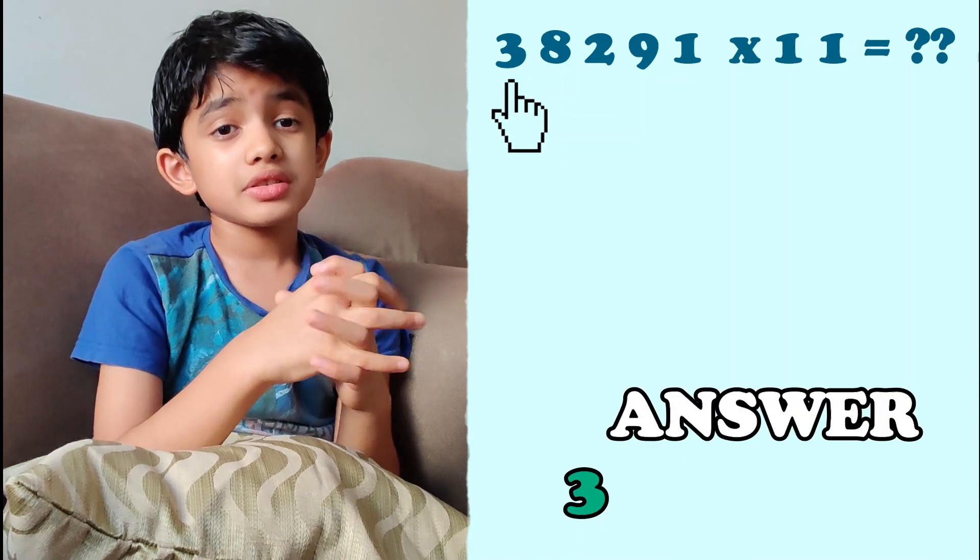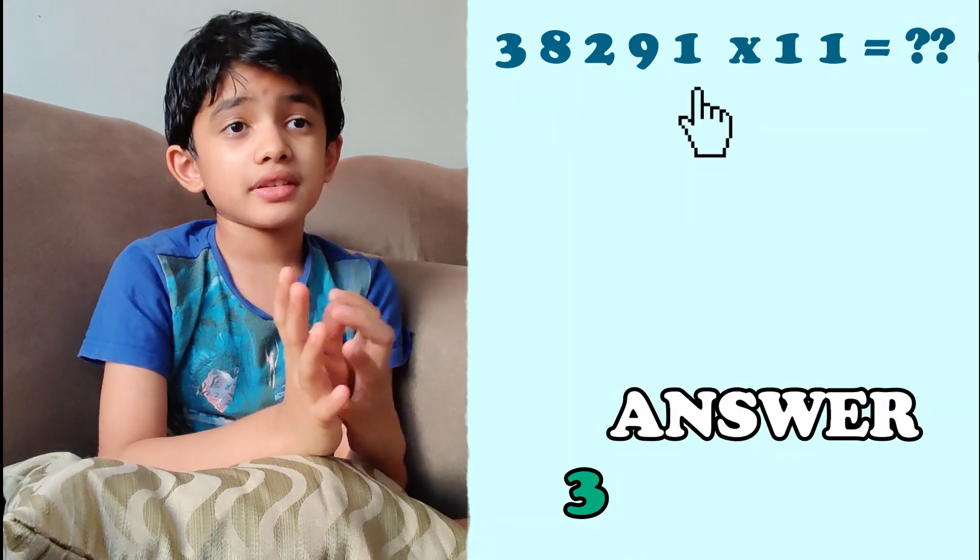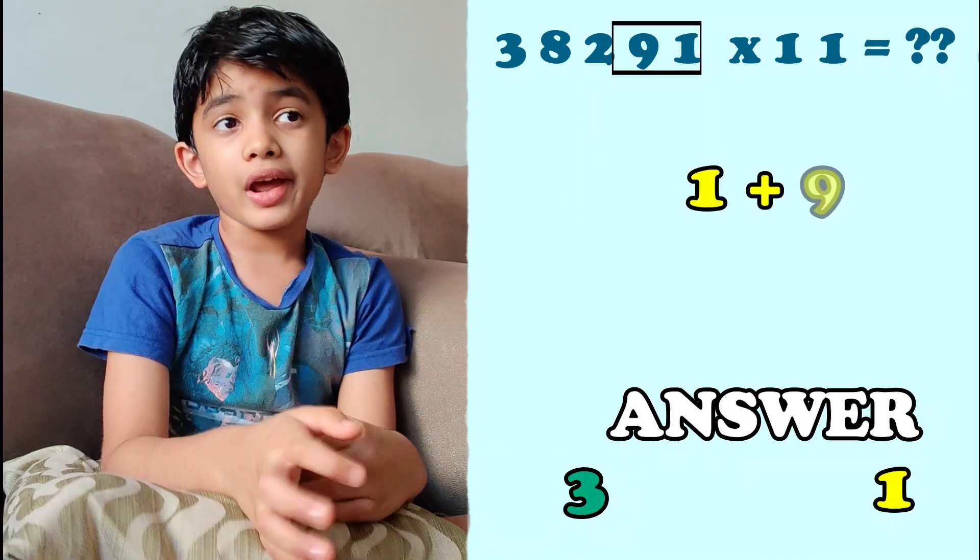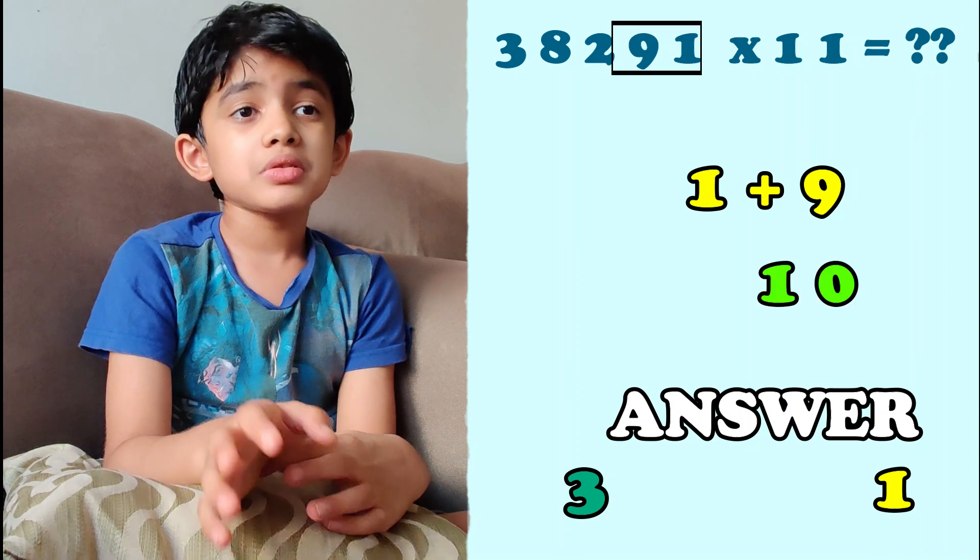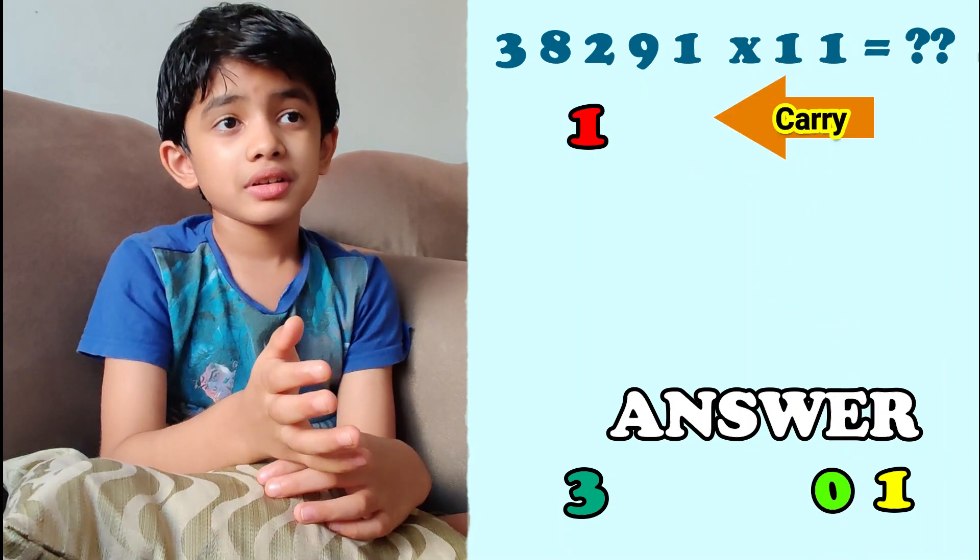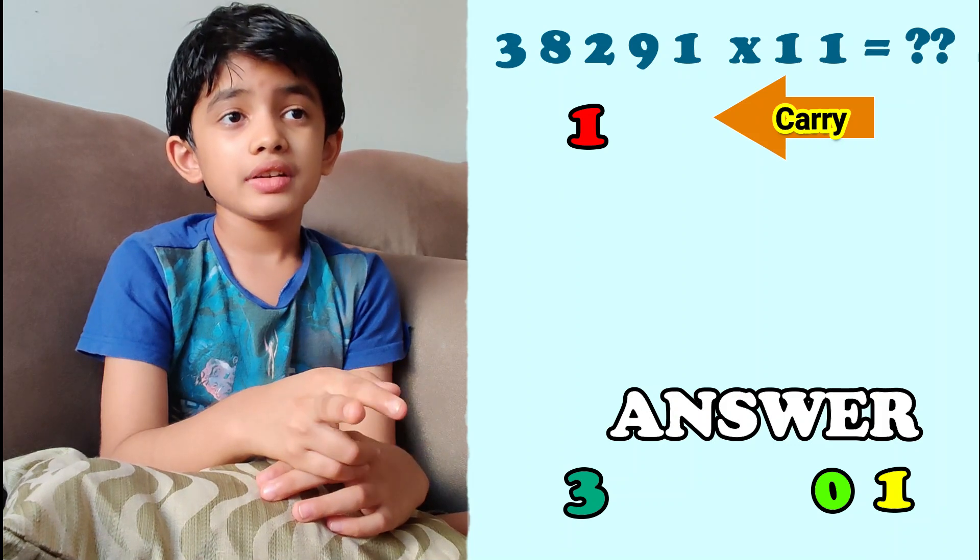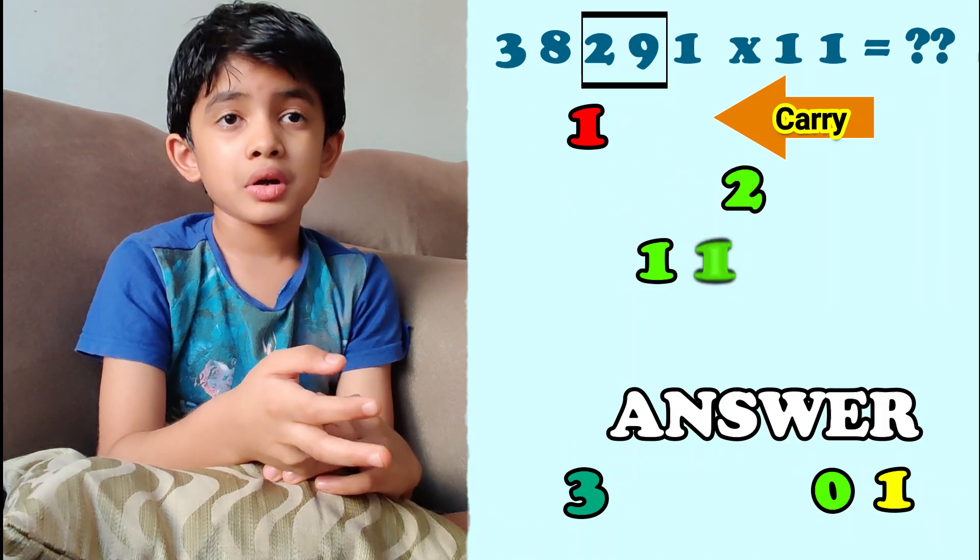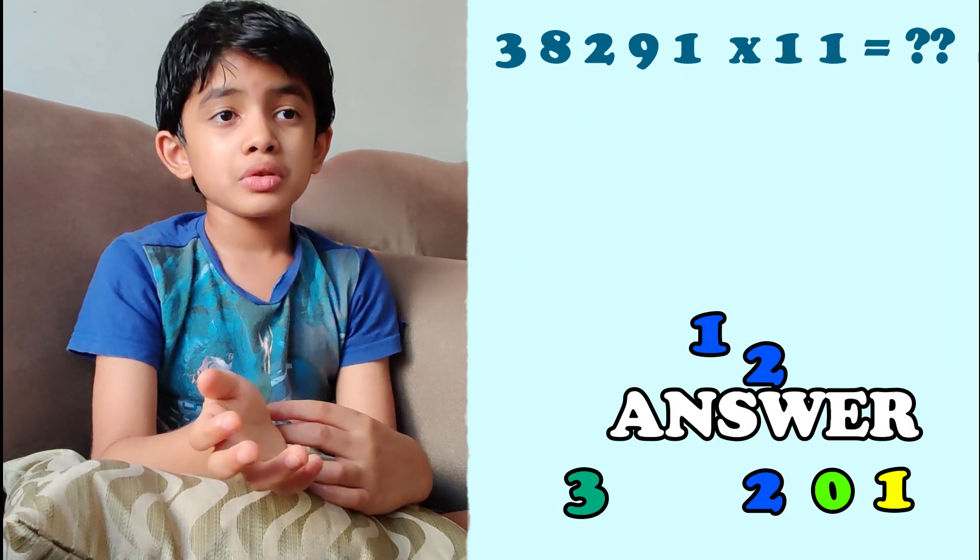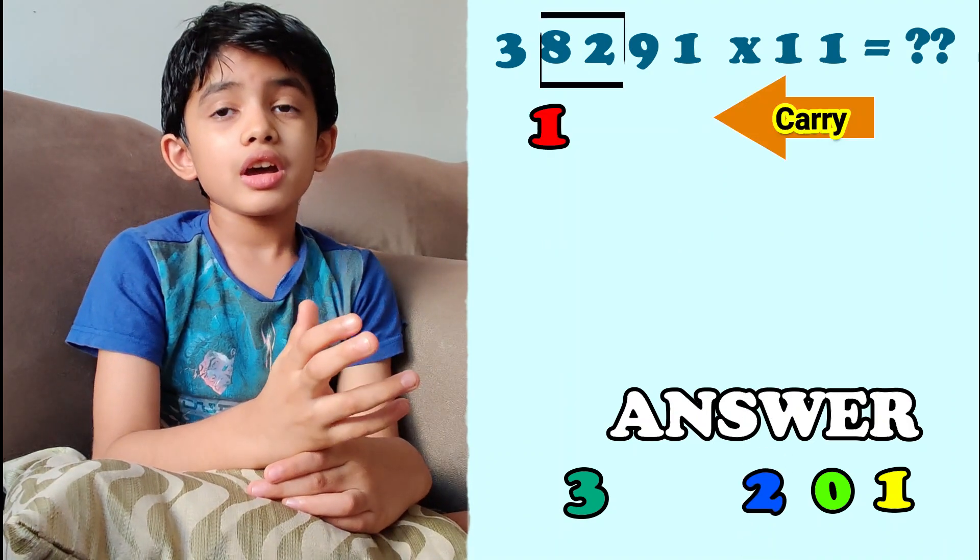Write 3 as the first digit and 1 as the last digit of the answer. Now add 1 and 9 which will give you 10. Write the 0 and carry the 1. Now add 9 and 2 which will give you 11. Now add the carry 1 which will give you 12. Write the 2 and carry the 1.